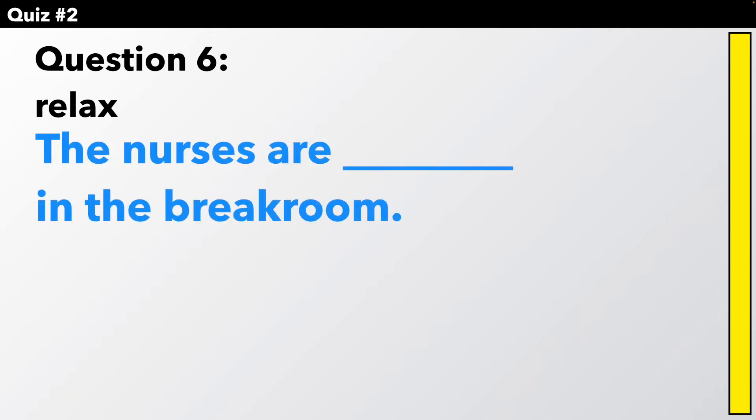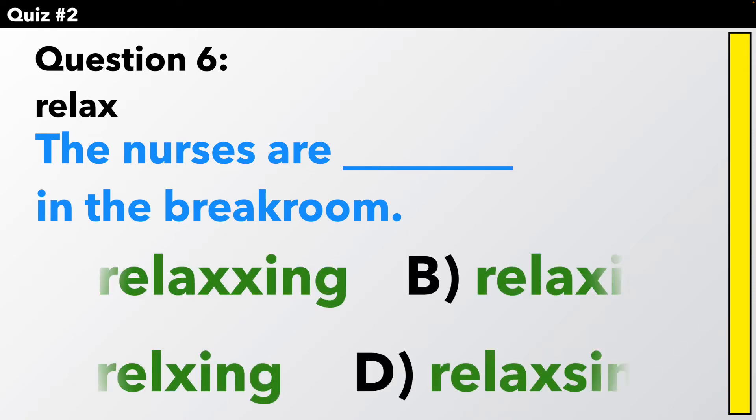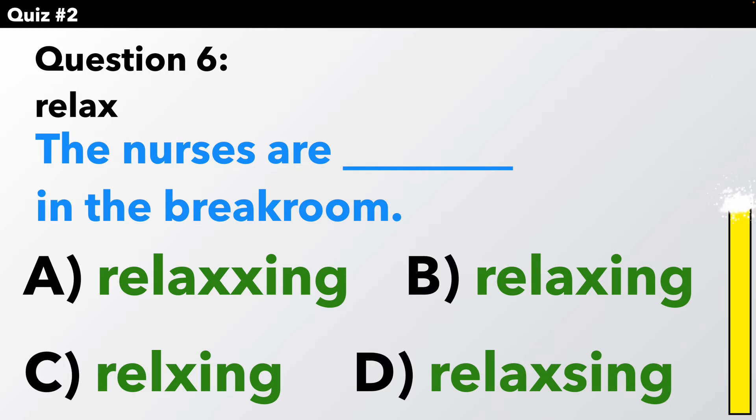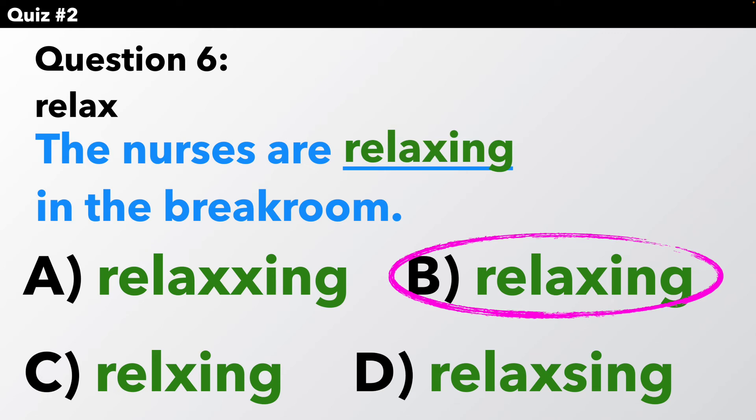Question number six. Relax. The nurses are relaxing in the break room. How do we spell relaxing? We did nothing to the verb. We just added I-N-G because it ends with a W, X, or Y.